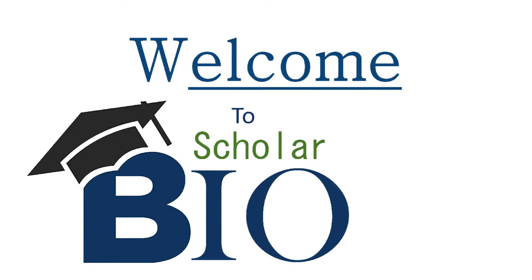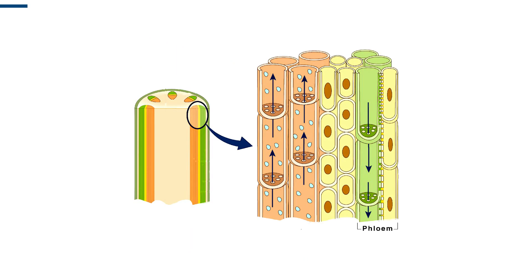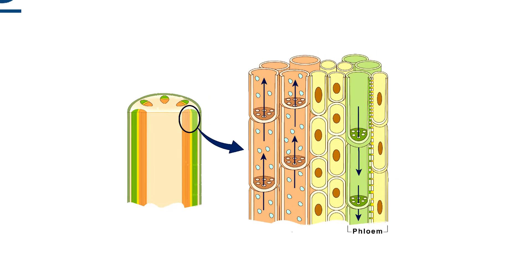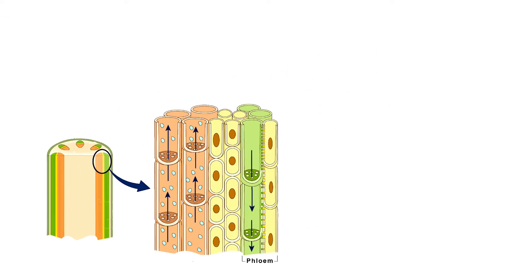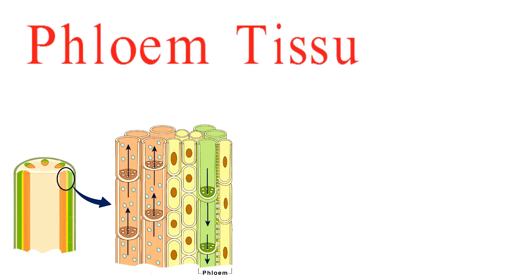Welcome to Bioscholar. In this video series, we dive deep into the world of plant biology. Today, we're going to explore one of the most critical components of a plant's circulatory system: phloem tissue, one of the unsung heroes of the plant kingdom.